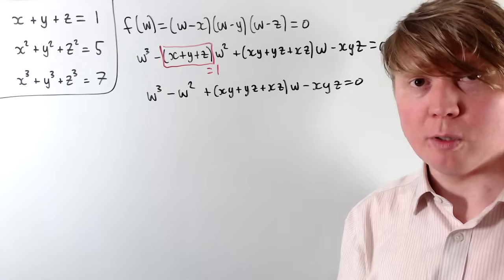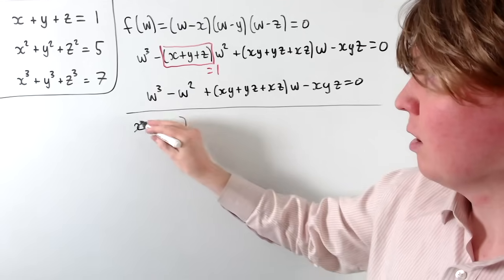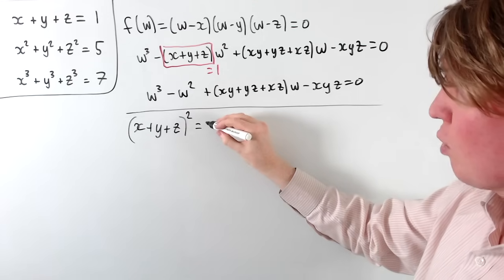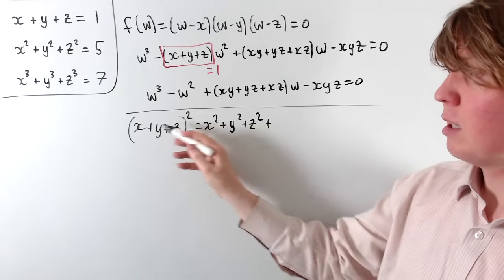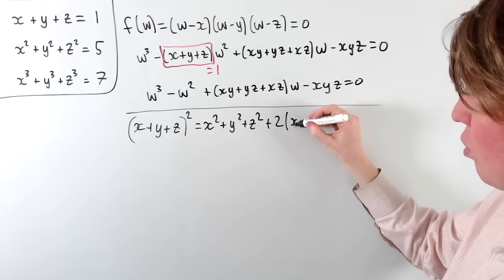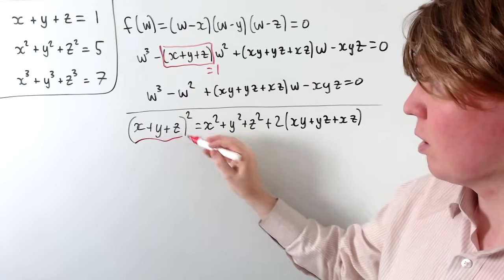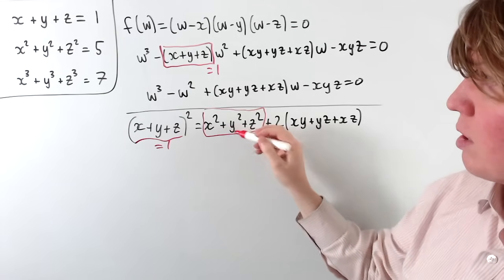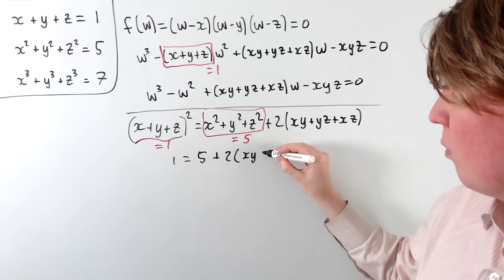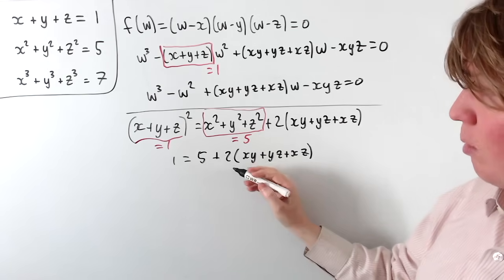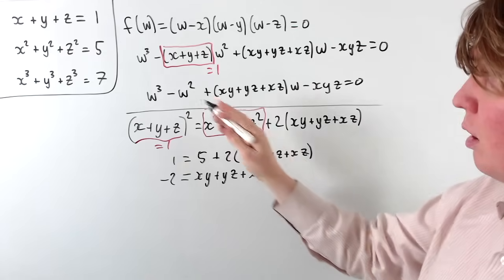To find the sum of the pairs xy + yz + xz, let's look at what happens when we expand (x + y + z)². This gives x² + y² + z² + 2(xy + yz + xz). We know x + y + z = 1, so the left side is 1, and x² + y² + z² = 5 from the question. So 1 = 5 + 2(xy + yz + xz), and subtracting 5 then dividing by 2 gives xy + yz + xz = −2.